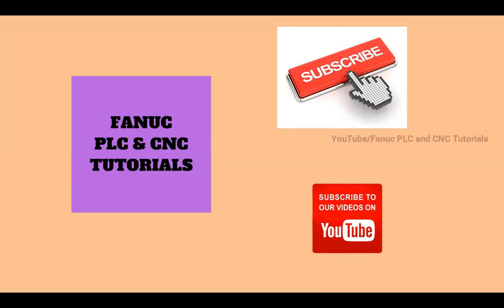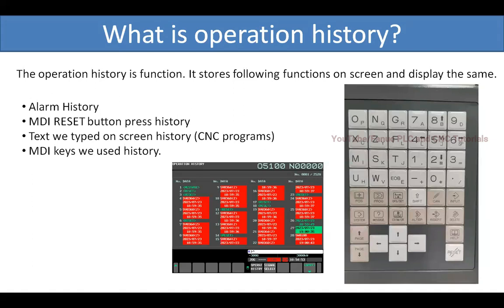What is operation history? The operation history is a function that stores the following on screen and displays the same. On the operation history screen you can see previously: alarm history, MDI reset button press history, whatever text you have typed on the CNC screen — like CNC programs and MDI keys used previously. For example, right arrow key, left arrow key — all those keys used before will be stored on this screen.